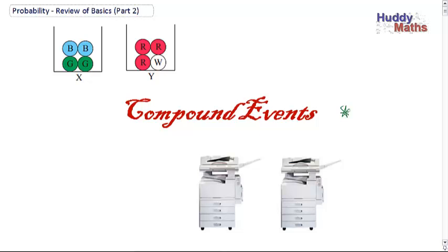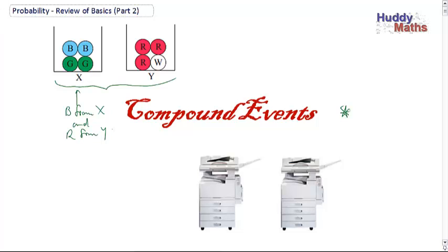Let's have a look at the examples. The screen clippings are from Hayes and Harris Publications, so you might look at their textbook. We've got two containers with marbles or balls in them, and we're going to work out the probability of getting a blue from container X and a red from Y. The event consists of two draws, and we want the probability of getting those two together — so it's a compound event.